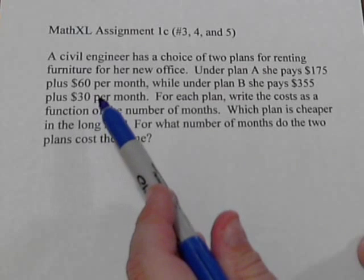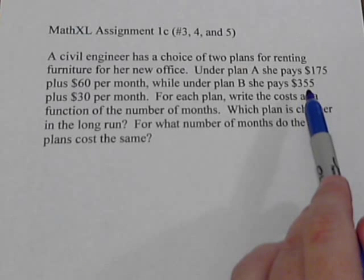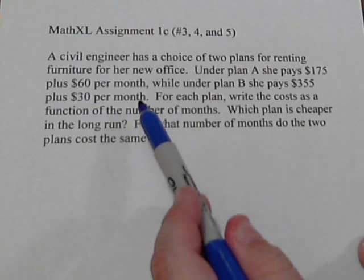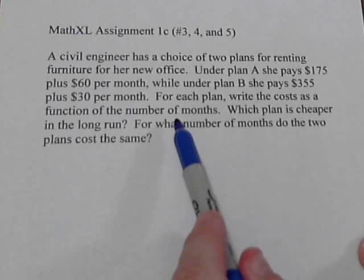Under plan A, she pays $175 plus $60 per month. Plan B, she pays $355 plus $30 per month. So for each plan, we want to write the function and decide which plan is cheaper in the long run.